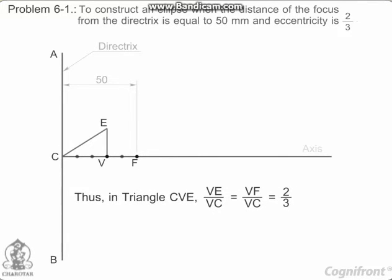Thus, in triangle CVE, VE upon VC equals VF upon VC equals 2 by 3.